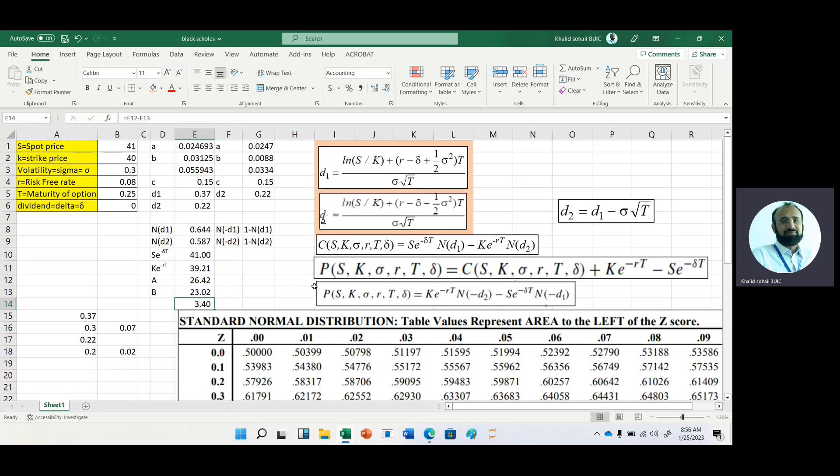Now for put option price, we have the call option plus K times e raised to minus rT minus S times e raised to minus delta T. This is 1.61. This is the put option, and the previous one is the call option.